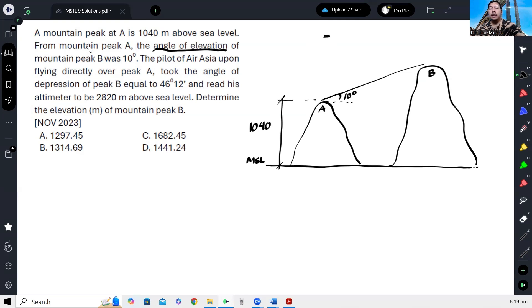The pilot measured the angle of depression of B. So the angle of depression is 46 degrees, 12 minutes. And then the pilot checked the elevation, which is 2,820. So this is 2,820.